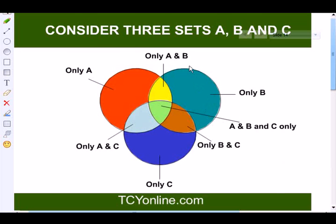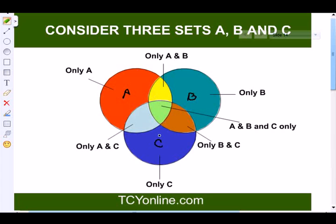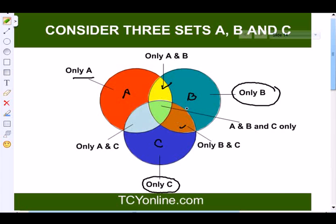Now let's look at the Venn diagram of three sets A, B, and C. The red portion represents only set A, the blue represents only set B, and the dark blue represents only set C. The yellow represents only A and B, the brown represents only B and C, and another region represents only A and C. The intersection of all three sets A, B, and C together gives the green portion in the center.